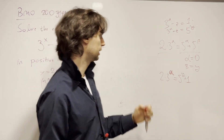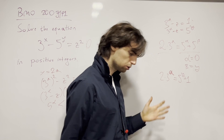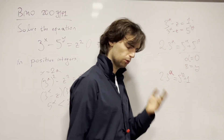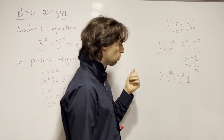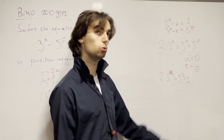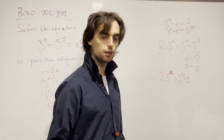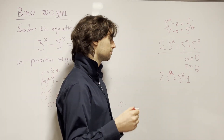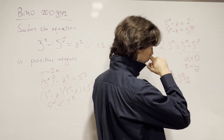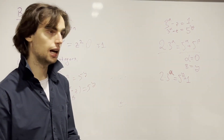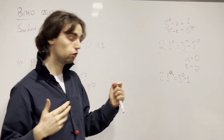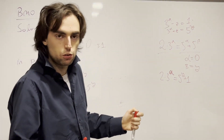For a = 1, we have a solution: 2 · 3 = 6 = 5 + 1. Then for 2 · 9 = 18, 2 · 27 = 54, 2 · 81 = 162 — we don't seem to get a solution. So we're thinking: for a ≥ 2, could it be the case that there's just no solution? That's our intuition, and that's what we need to prove.